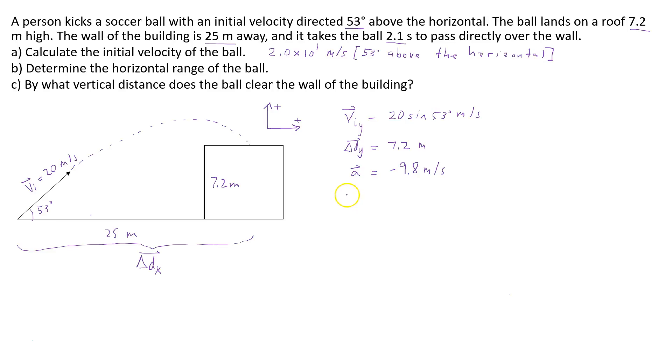And so what we're looking for here is we're looking for the time. So we don't know the time that it takes for the ball to land on the roof. So the kinematics formula that I'm going to use to solve for the time is this one. So it's delta dy is equal to v initial times delta t plus 1 half times the acceleration times delta t squared. So that's one of the five kinematics formulas.